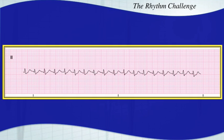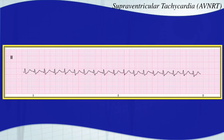This one is another SVT — another AV nodal reentry tachycardia. No obvious atrial depolarization, but you do have very narrow, very regular QRS complexes, and it's very fast. That is AVNRT. To simplify it, we'll call it SVT.